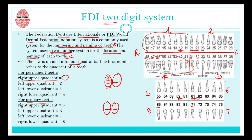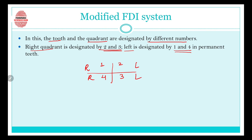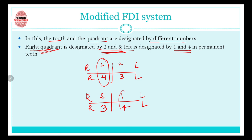There is also a Modified FDI system, where the tooth and quadrant are designated by different numbers. In Modified FDI, the right quadrants are designated by 2 and 3, while the left quadrants are designated by 1 and 4. This is the opposite of standard FDI, where the right quadrants were 1 and 4 and the left quadrants were 2 and 3 — so the quadrant designations are essentially switched.